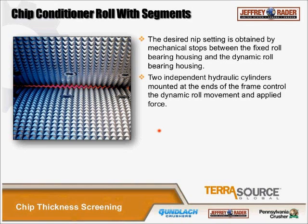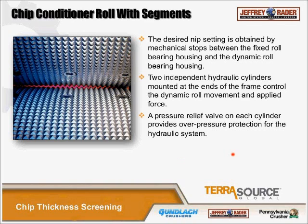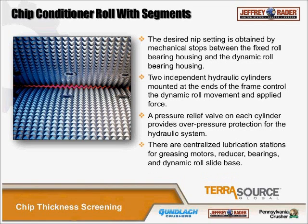At our facility in Portland, Oregon, when clients would visit, we'd throw a 2x4 down in there and it would bang and scare you half to death, but the 2x4 would come out perfectly fissured — still look like a 2x4, but it would absorb liquor. On each of the cylinders is a pressure relief valve to prevent overpressure. There's also centralized lubrication for all bearings, motors, and slide ways for the dynamic slide.